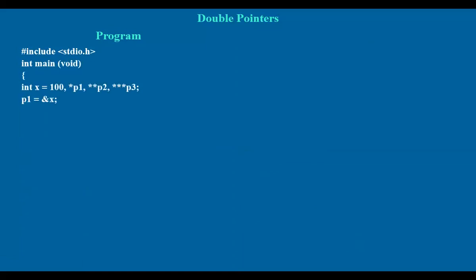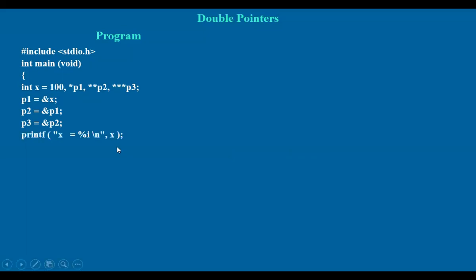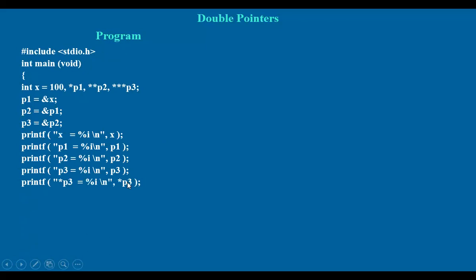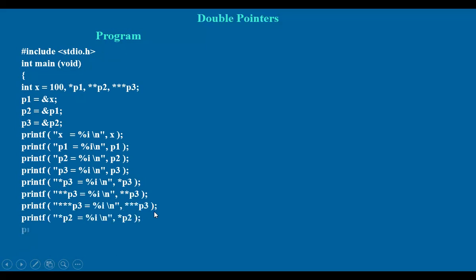Now let us take a variable x with value 100, and p1 star, double star p2, and triple star p3. That means x value is stored in p1 pointer, p1 address is stored in p2, and p2 address is stored in p3. We are increasing one level after another. Let us see these values: x, p1, p2, p3, and star p3, double star p3, triple star p3, and also star p2, double star p2, and single star p1.